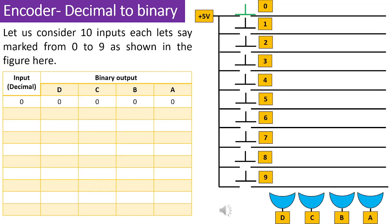In this configuration, there are 10 switches serving as inputs, each labeled from 0 to 9. One side of all the switches is connected to a positive 5-volt source. The other ends of the lines are connected only when a switch is pressed. The switches depicted here are of the press-to-on type. In the current state, switch 0 is pressed, causing the line on the other side of the switch to carry a logic 1. However, since the binary output for decimal 0 is represented as 0000 in a 4-bit format, there is no need to connect anything to the OR gates. Therefore, when switch number 0 is pressed, the output remains 0000.